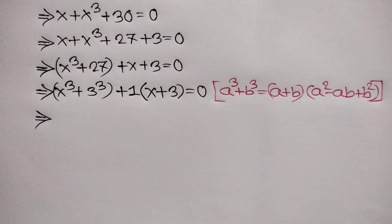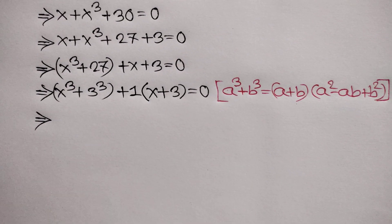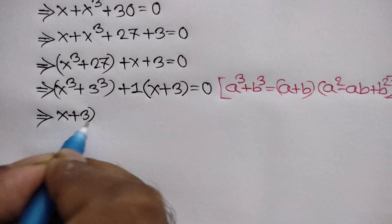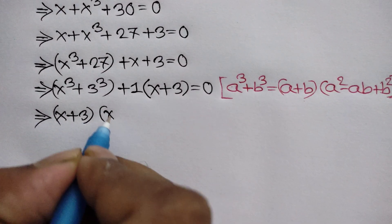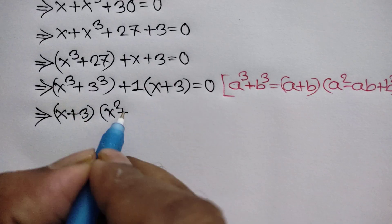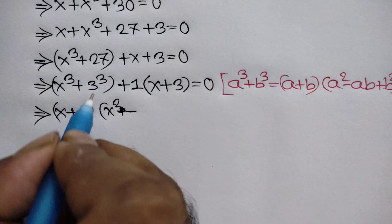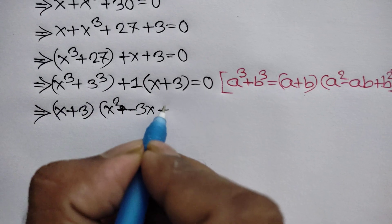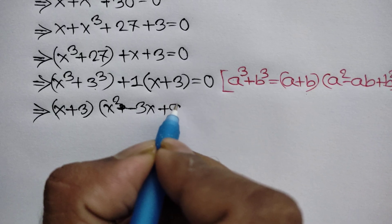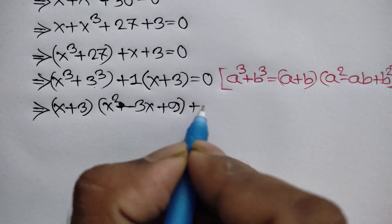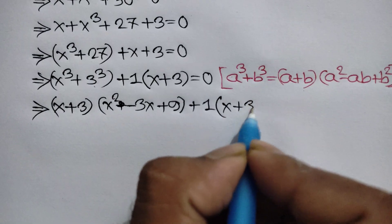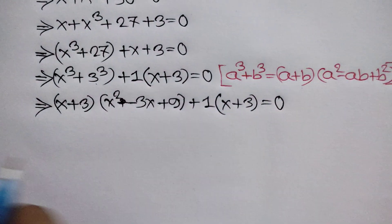Applying this formula, we can write x plus 3, times x squared minus x times 3, which is 3x, plus 3 squared, that means 9. Plus 1 times x plus 3, is equal to 0.